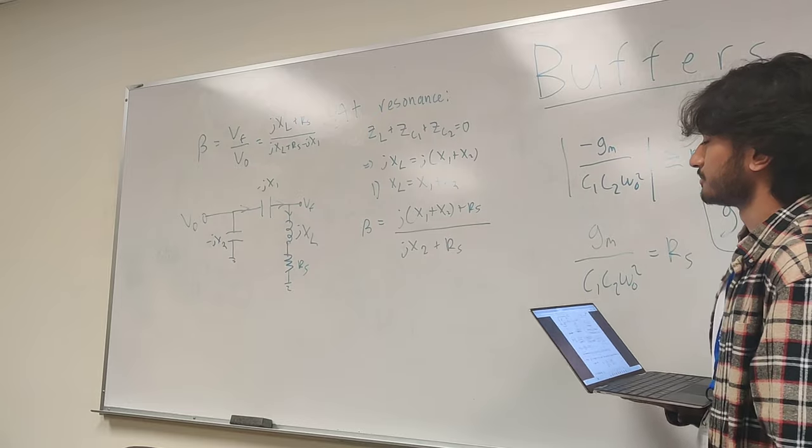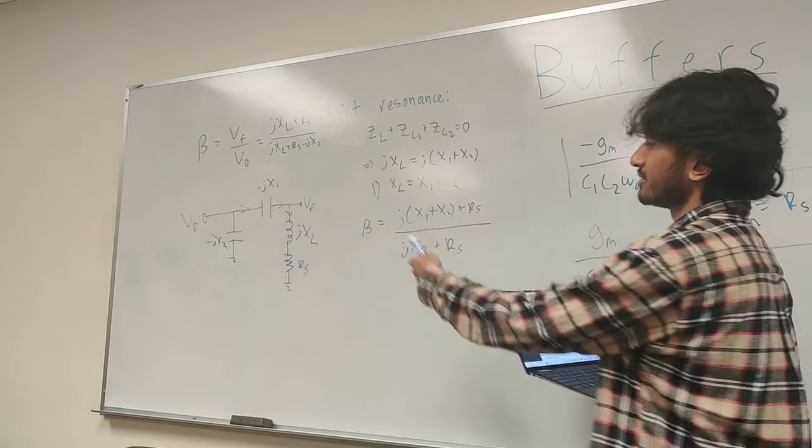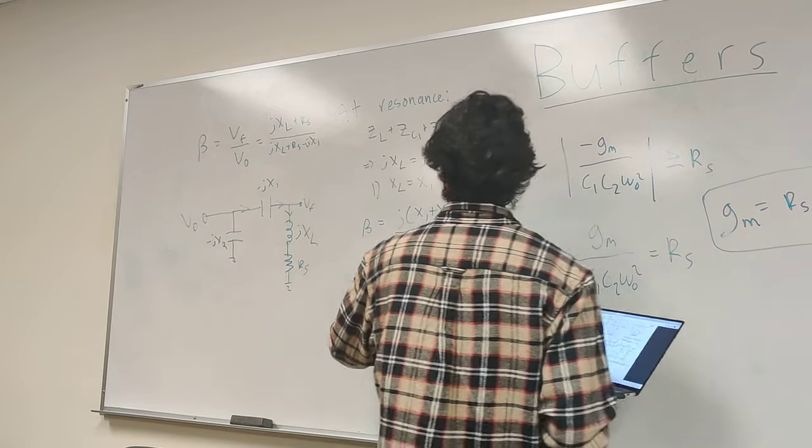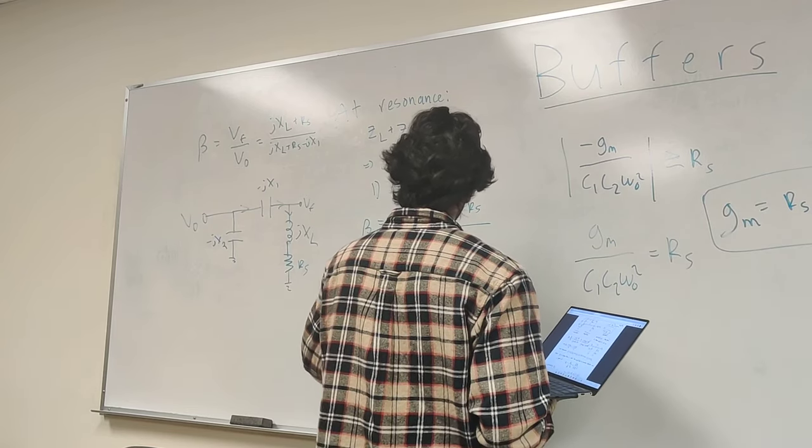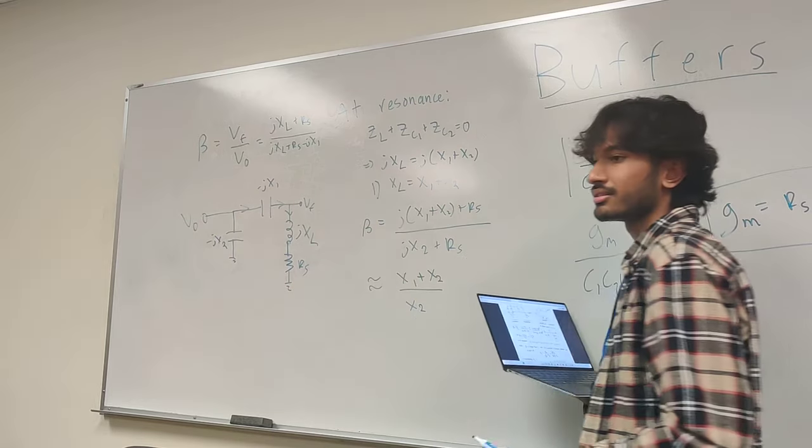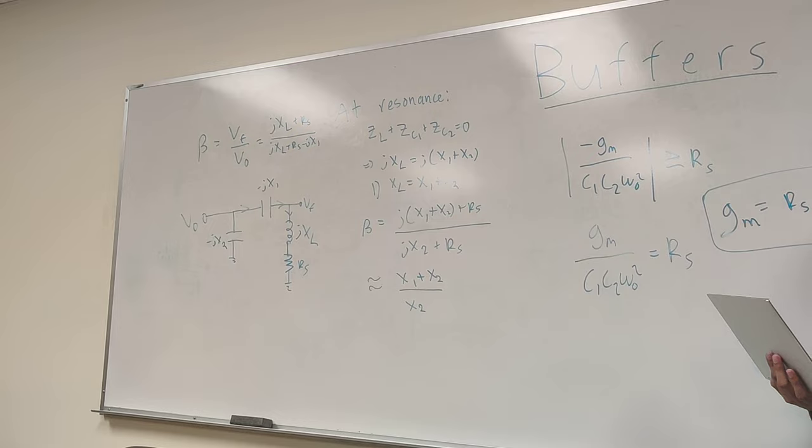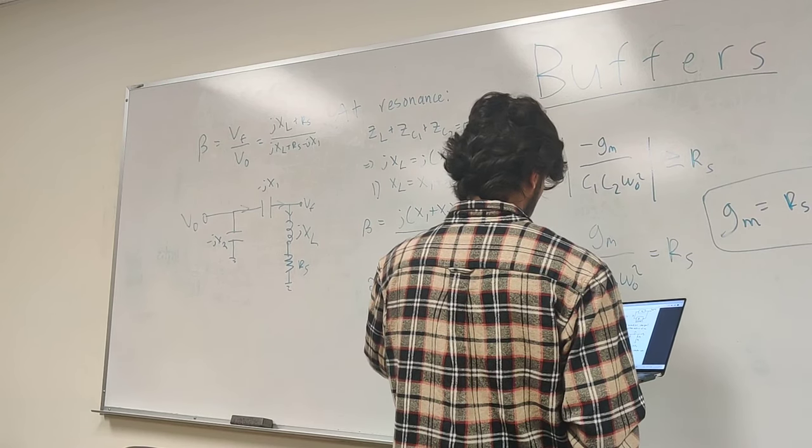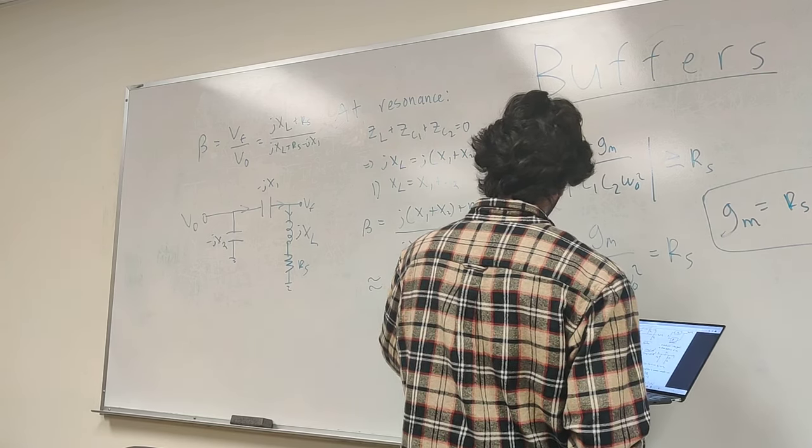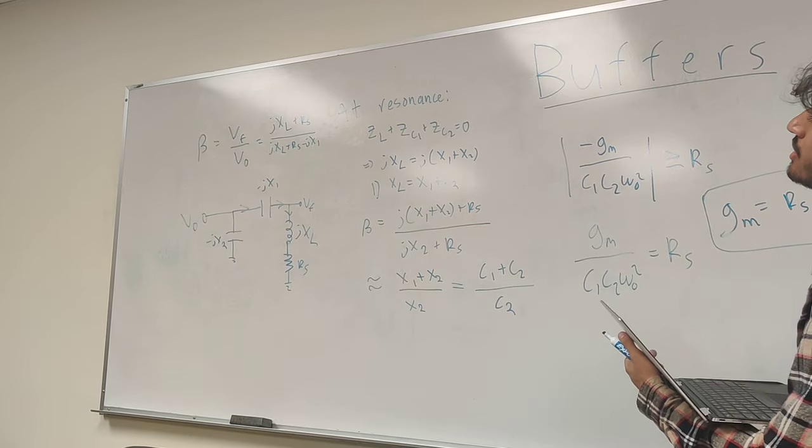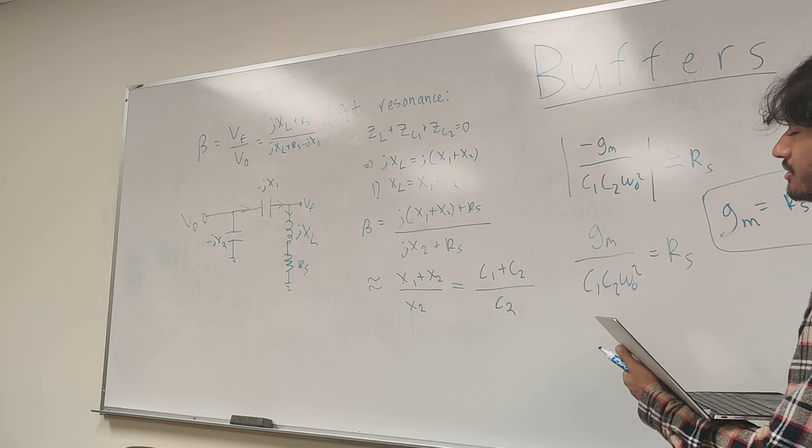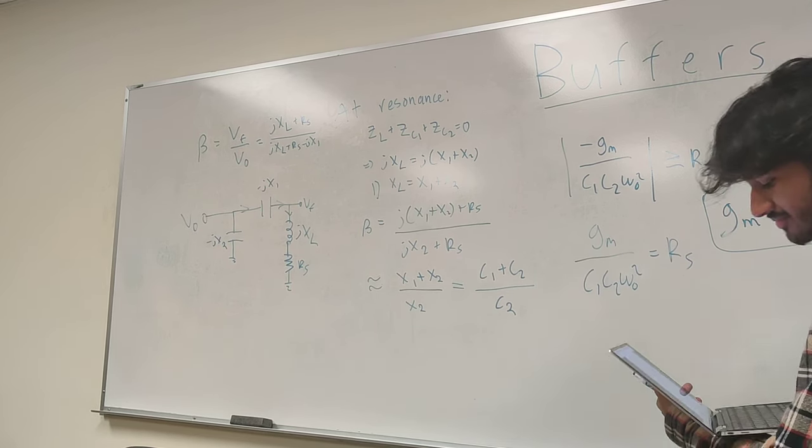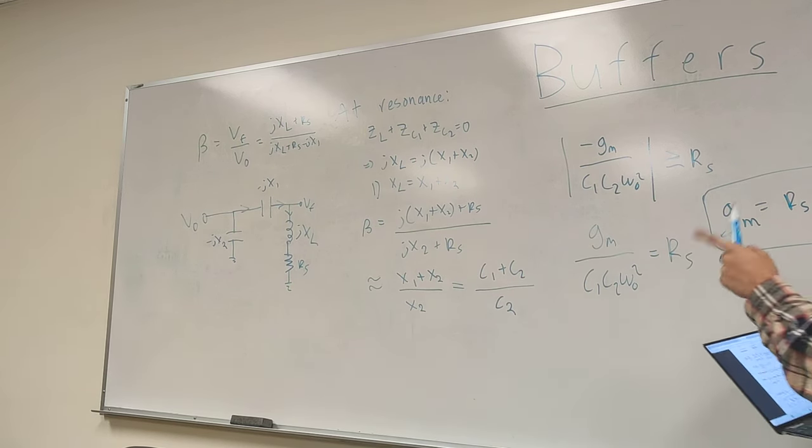So now we're going to combine this equation with this one at resonance. Now we get that beta is going to be equal to... So now we get this equation here. You make another assumption here. We say that RS is going to be very small compared to these reactances. So if RS is very small, we can say it pretty much goes away. So we get X1 plus X2 over X2.